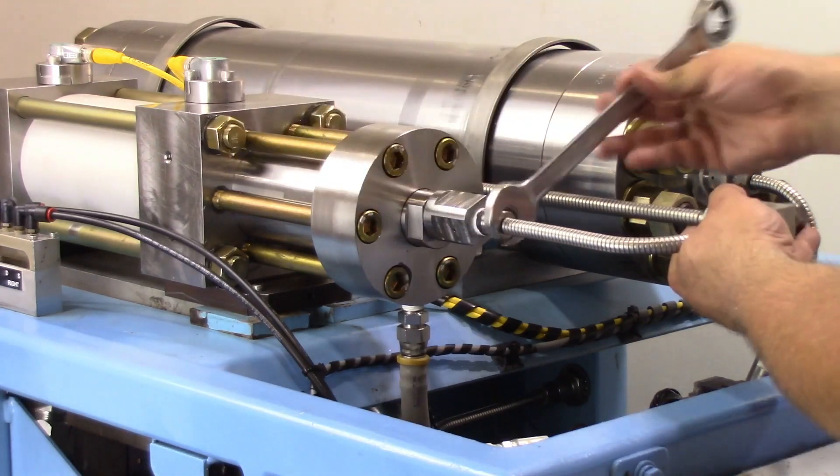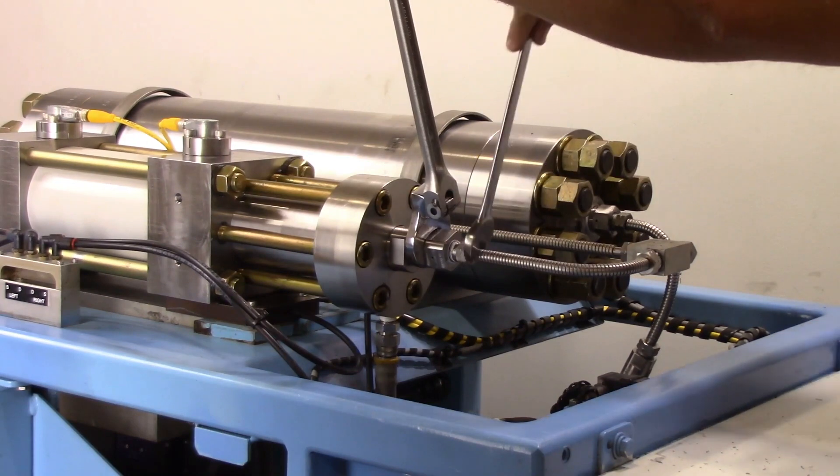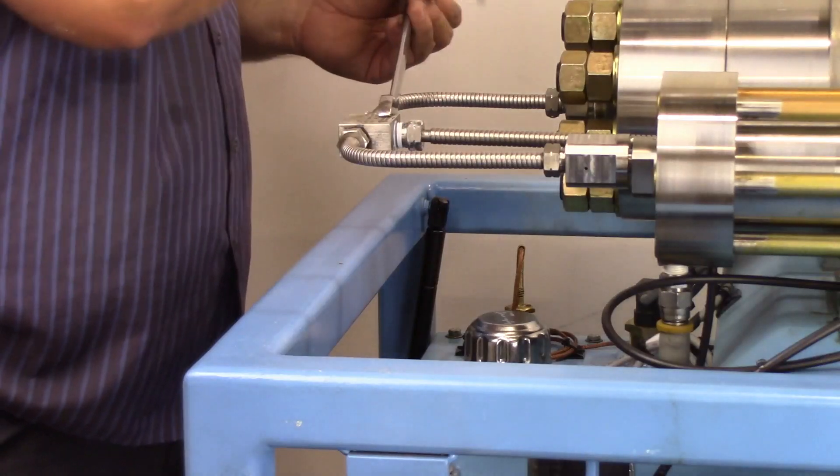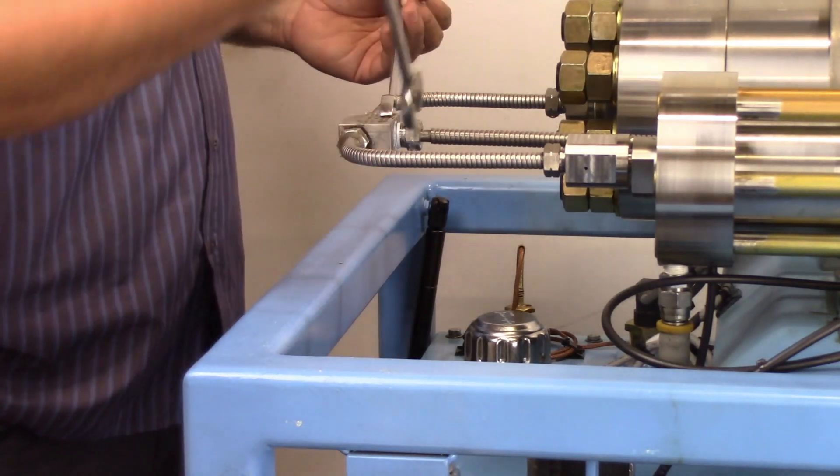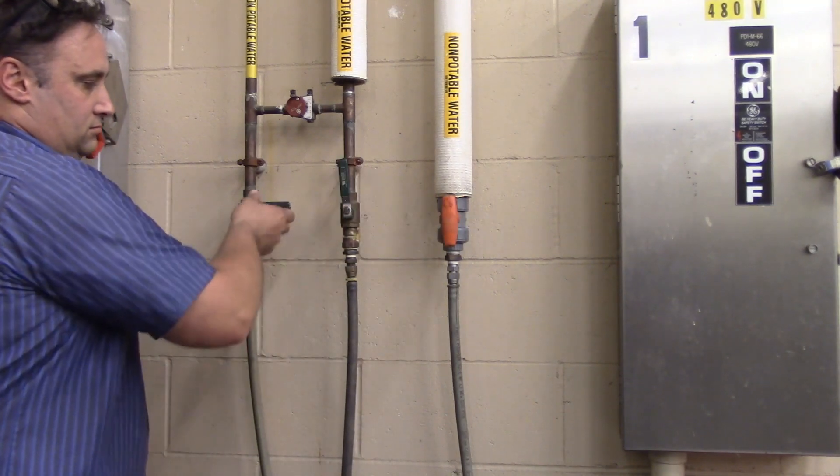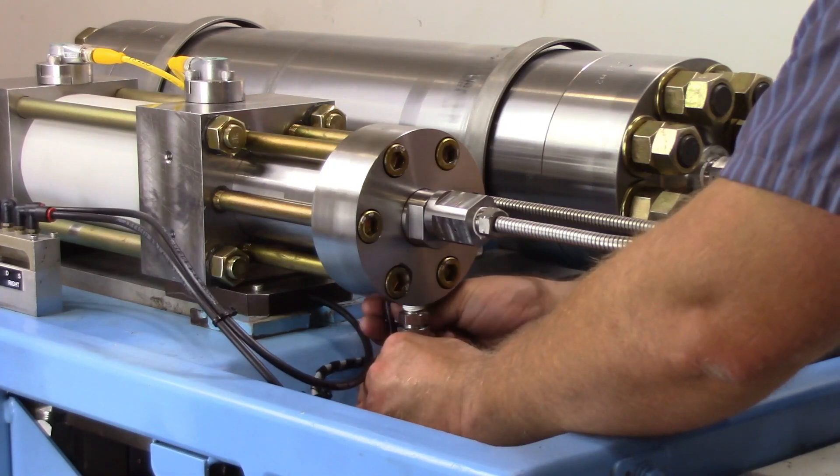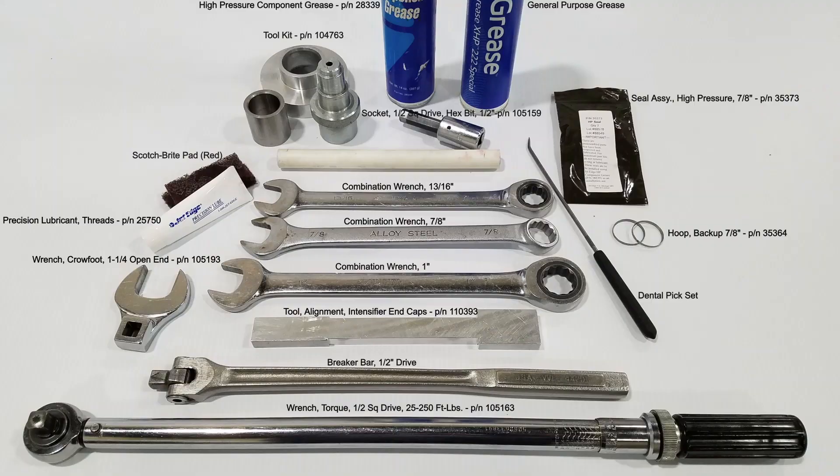Tighten all connections using two wrenches. The machine is now ready to be brought back into service. Remove locks and turn back on your water source.